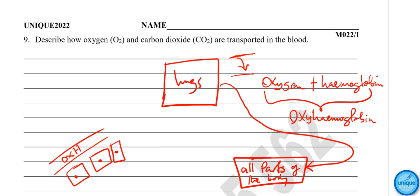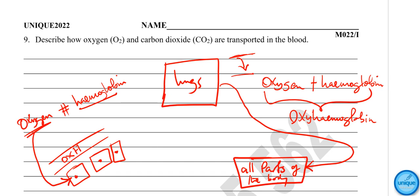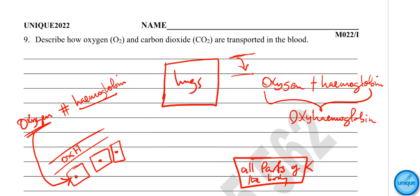This oxyhemoglobin is then transported through the blood to all parts of the body and into the body tissues. When it reaches the tissues, the hemoglobin breaks apart and releases the oxygen. The oxygen then diffuses into the tissues, while the hemoglobin goes back to the lungs to collect more oxygen. This process continues repeatedly.